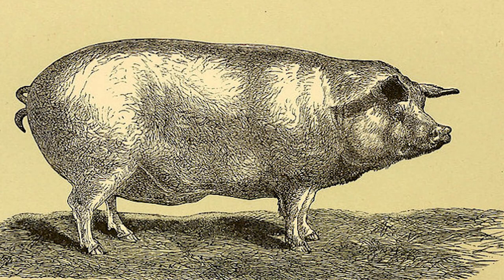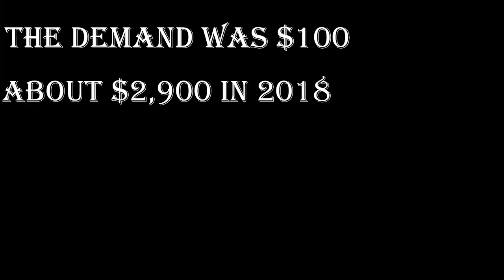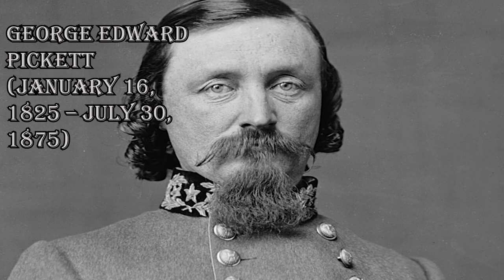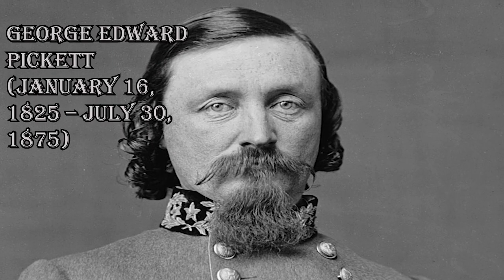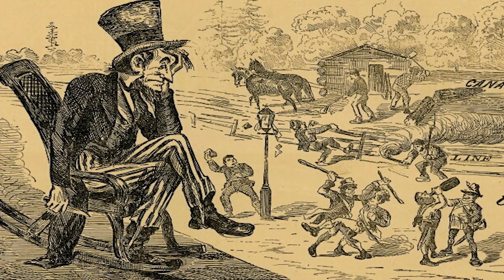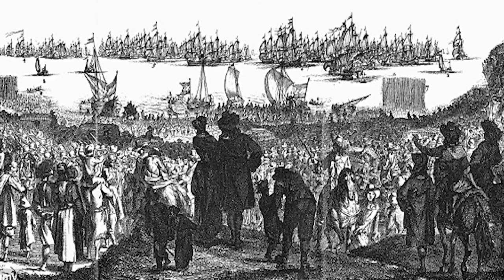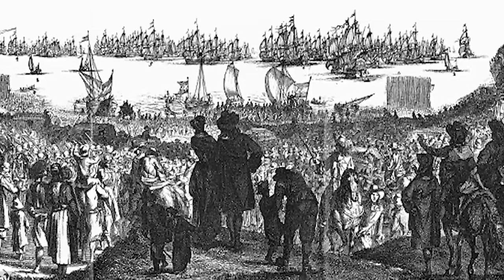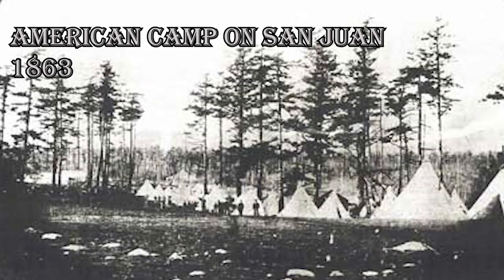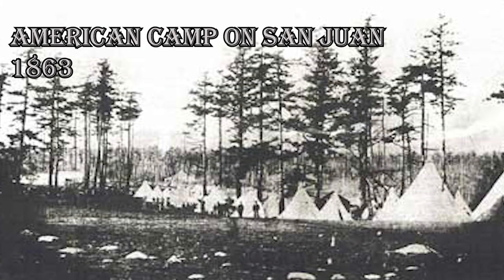The dispute came to a head when a pig was shot and killed by an American settler as it was eating his potatoes. The owner of the pig came to demand a heavy sum, and the argument reached the point where British authorities threatened to arrest the American, who in turn called for protection from local US units. A few dozen men under George Edward Pickett landed on San Juan Island with the goal of preventing the British from landing. The British saw this as a potential attempt to take over the islands by occupation and dispatched a number of warships to the area.